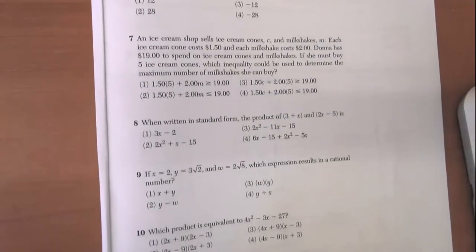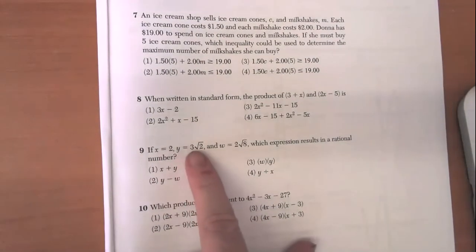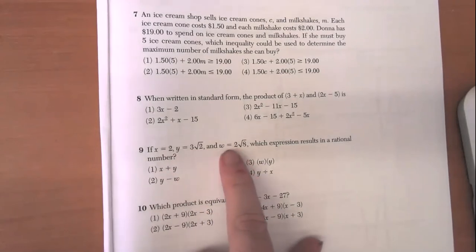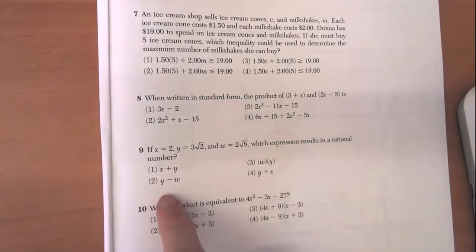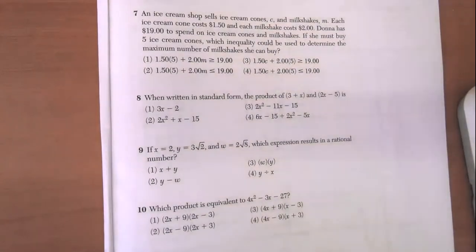Let's look at a place where instead of defining a function, we want to define some variables. Here's an example - this might work and might not work, but it doesn't hurt to try. If x = 2, y = 3√2, and w = 2√8, which one of these expressions results in a rational number?